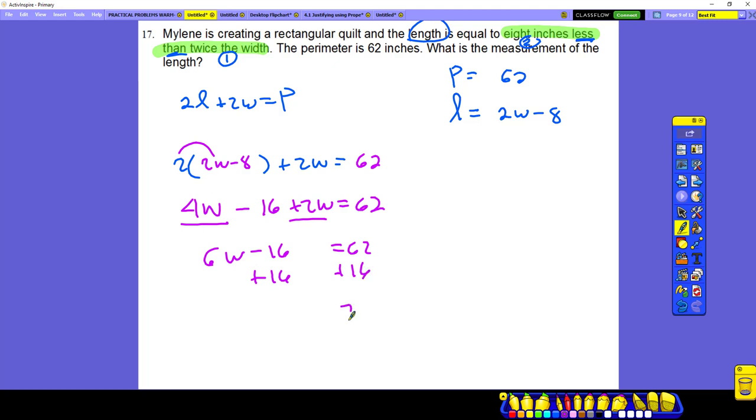No more like terms. So we have to undo 16. I mean, undo negative 16. Okay. What is 62 plus 16? 78. 78. I still have six W here. So divide by six. Divide by six. What do we have? What's that? 13. All right. 13.